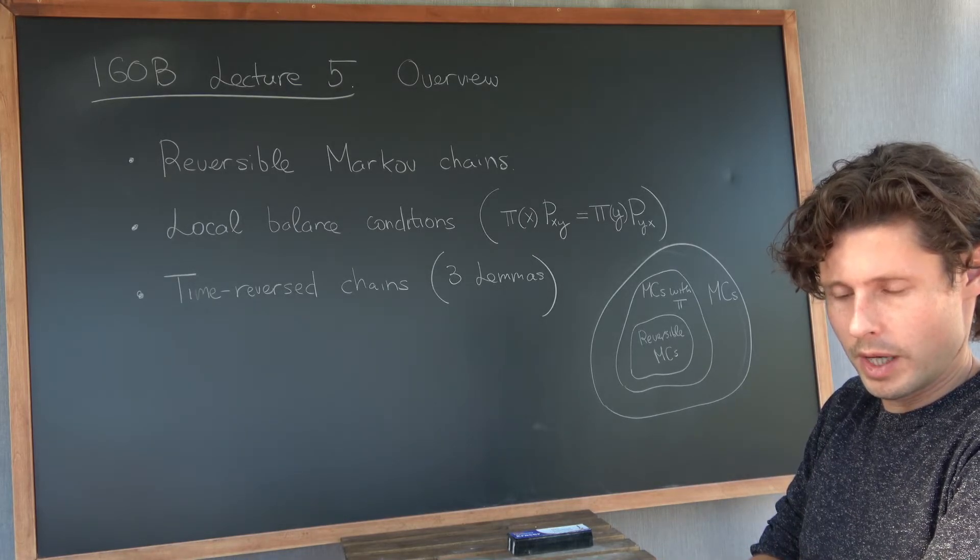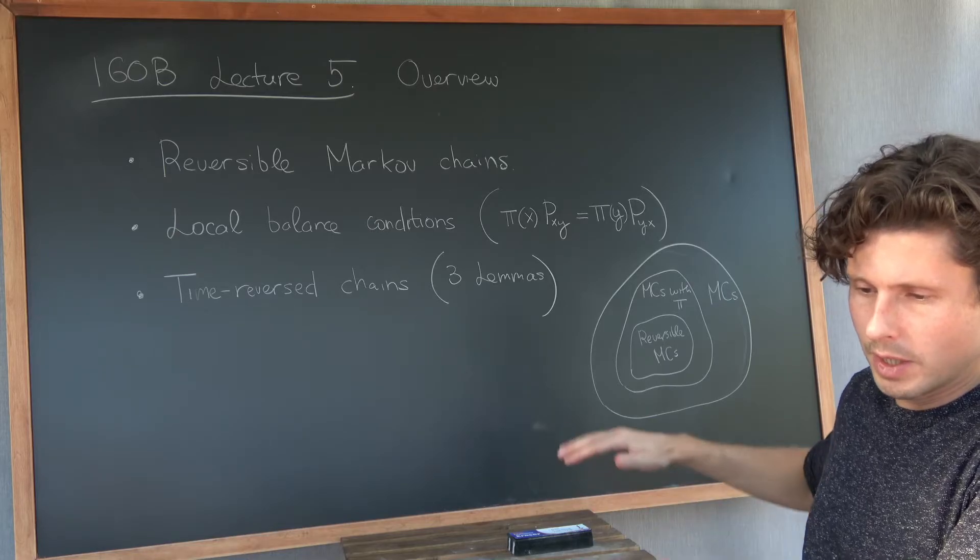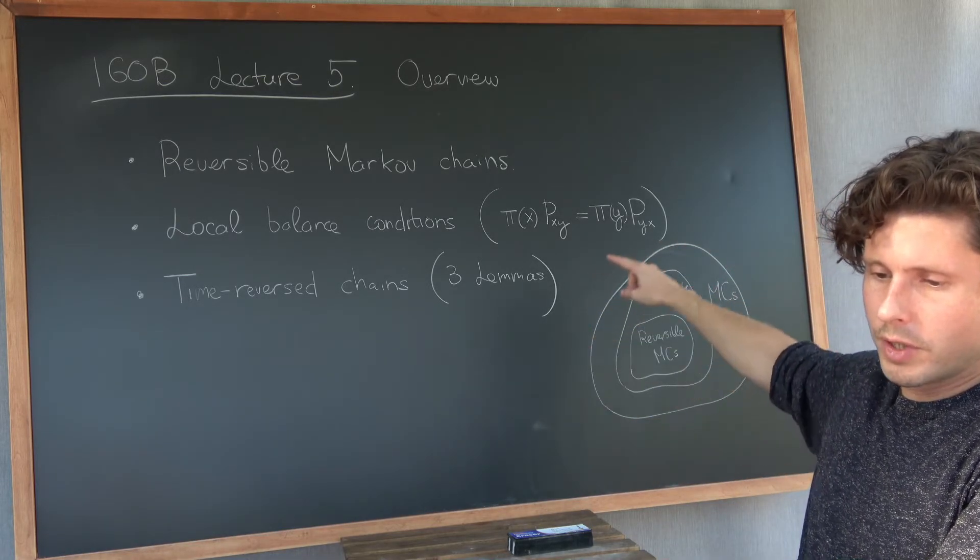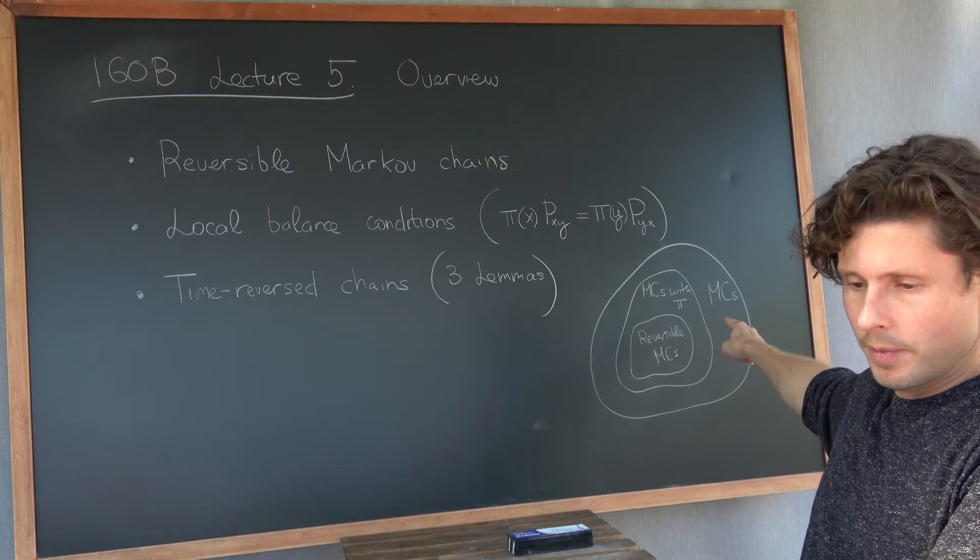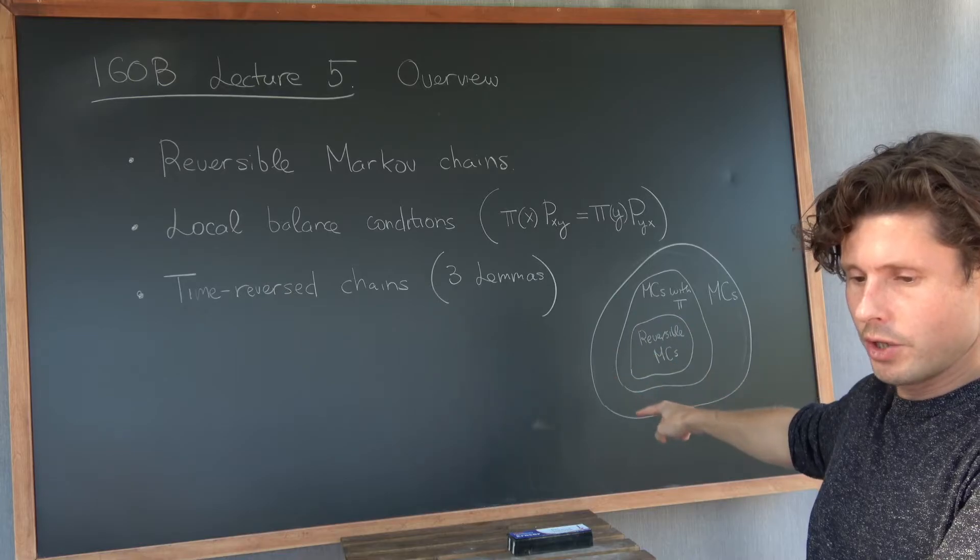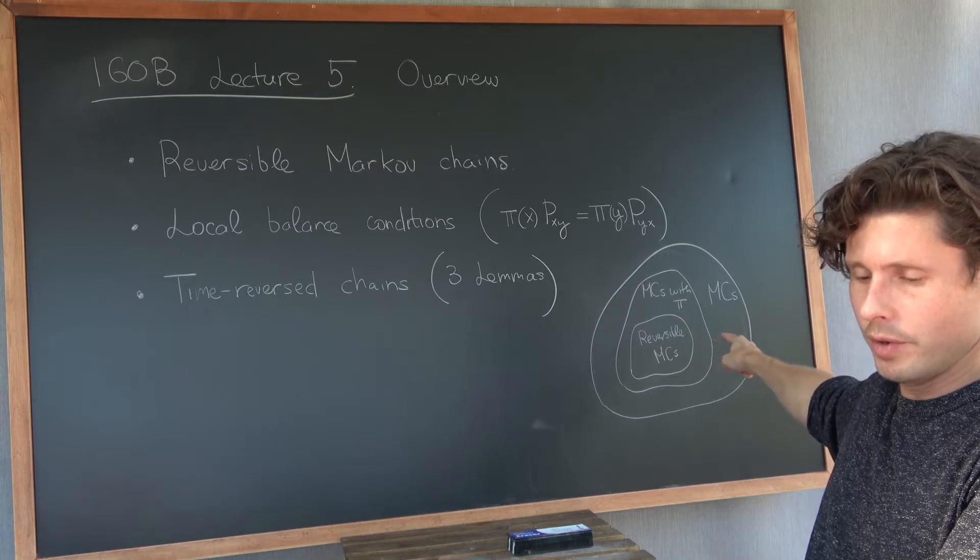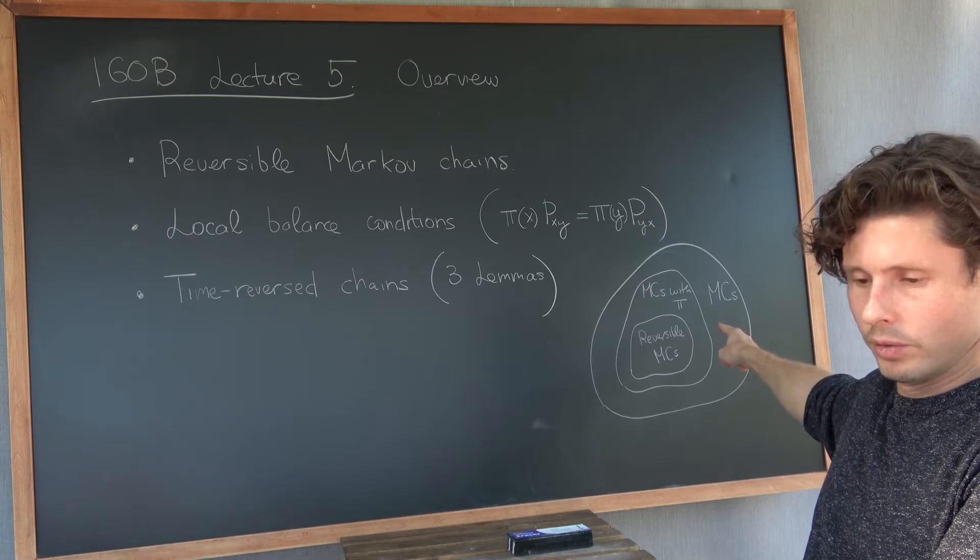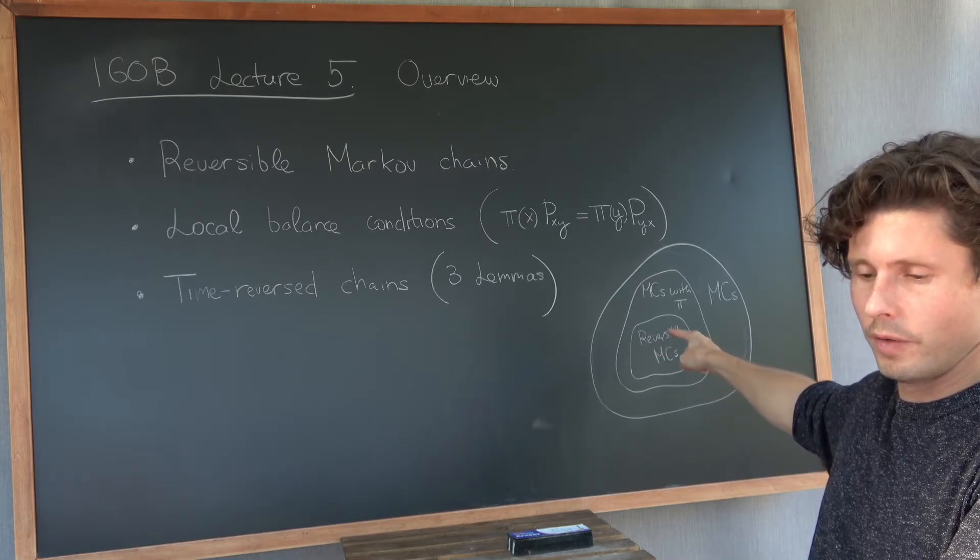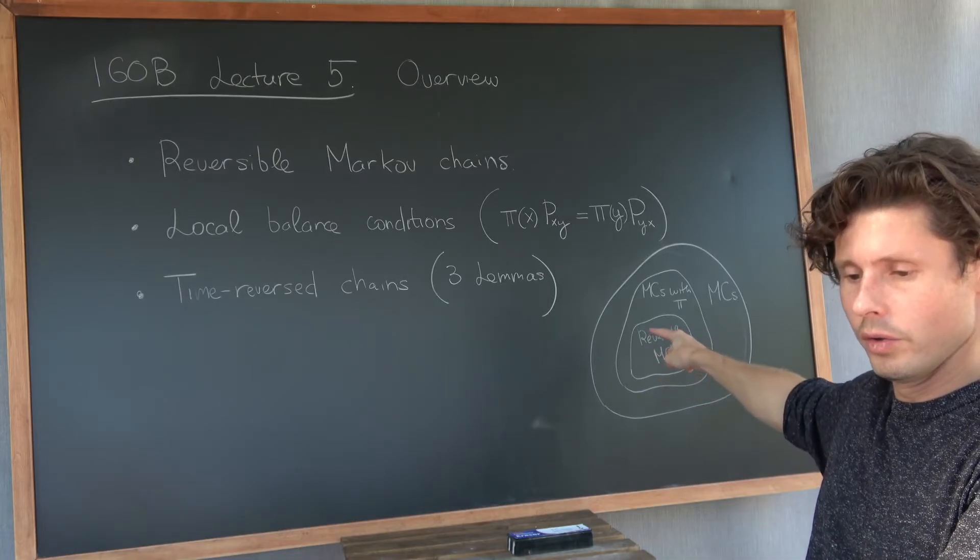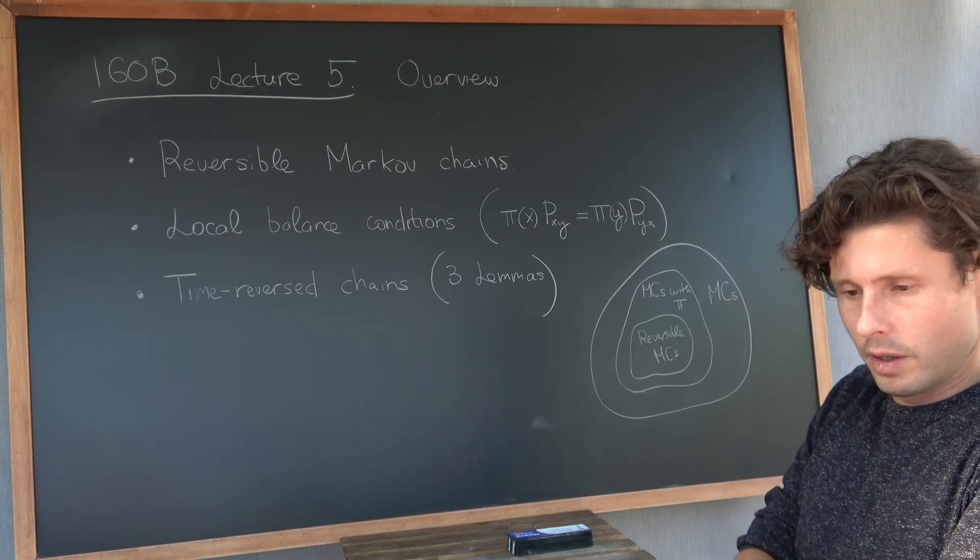And maybe one more remark before we get started is what's the big picture or hierarchy of the Markov chains that we've seen so far? There is the set of all Markov chains that I've drawn here in this big set, the all-encompassing set of Markov chains. Inside of it are going to be Markov chains with a stationary distribution. That's this set right here. These are Markov chains with pi, a stationary distribution. We'll see examples of Markov chains that belong here that don't have a stationary distribution. But as far as this lecture is concerned, we're looking at this further strict subset of Markov chains with a stationary distribution that are called reversible. And for these chains, it's these local balance conditions that are going to turn out to hold.